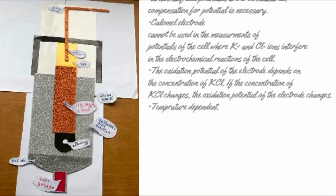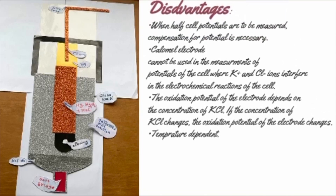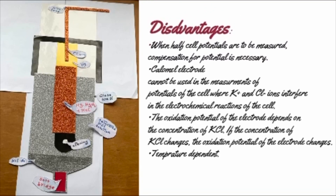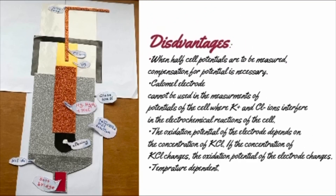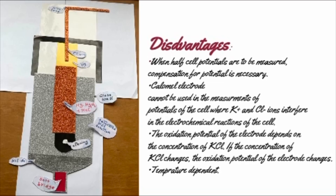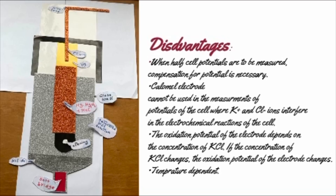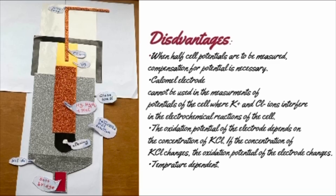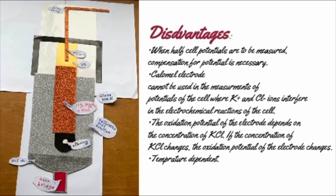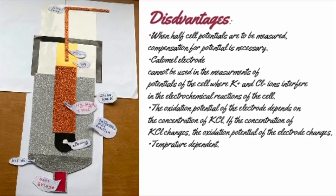Disadvantages of the calomel electrode include that when half cell potentials are to be measured, compensation for potential is necessary. The calomel electrode cannot be used in the measurement of potentials of cells where K and Cl ions interfere in the electrochemical reactions. The oxidation potential of the electrode depends on the concentration of the KCl — if the concentration of KCl changes, then the potential of the electrode changes as well. And last but not least, temperature is a dependent factor.